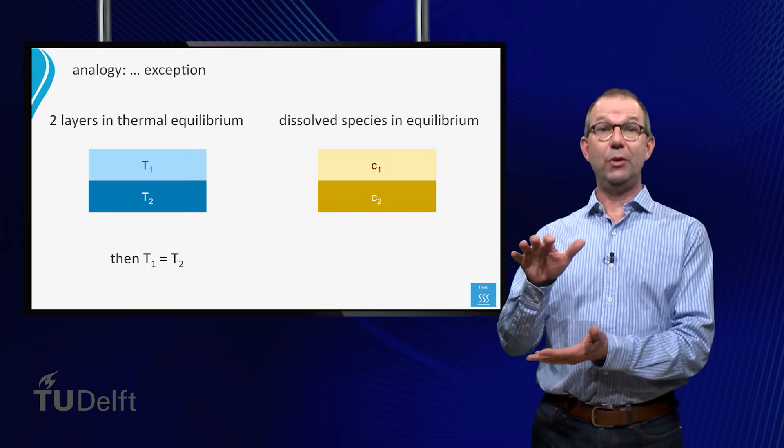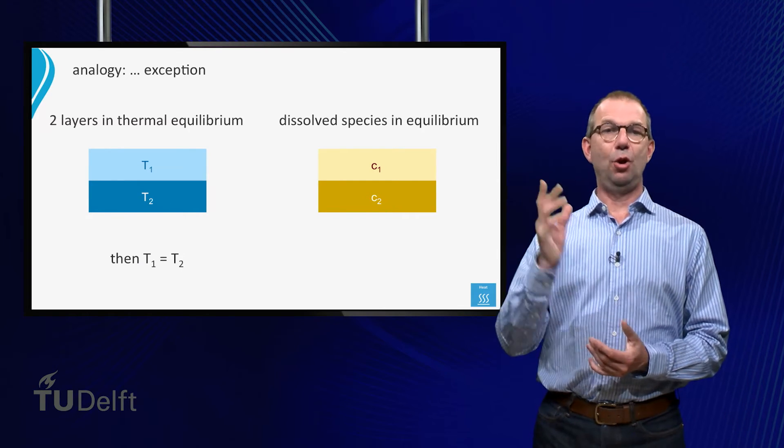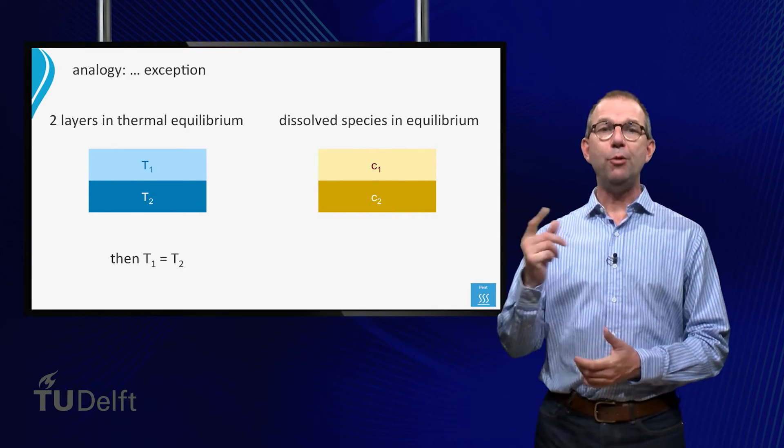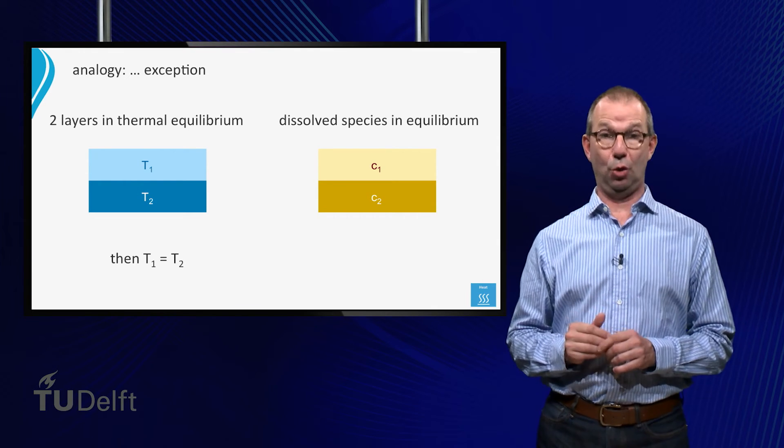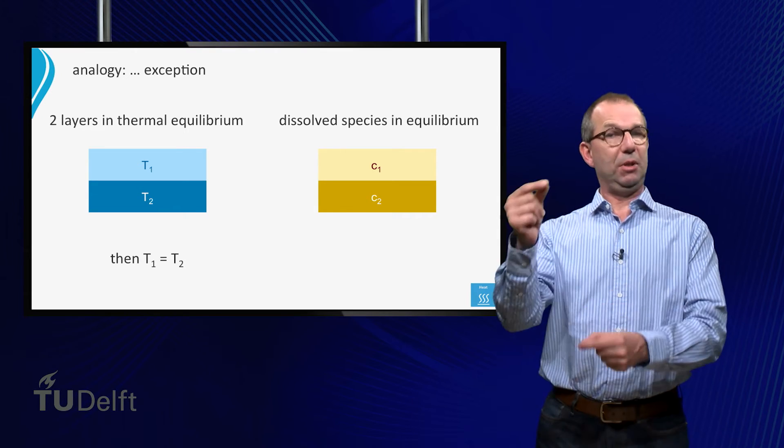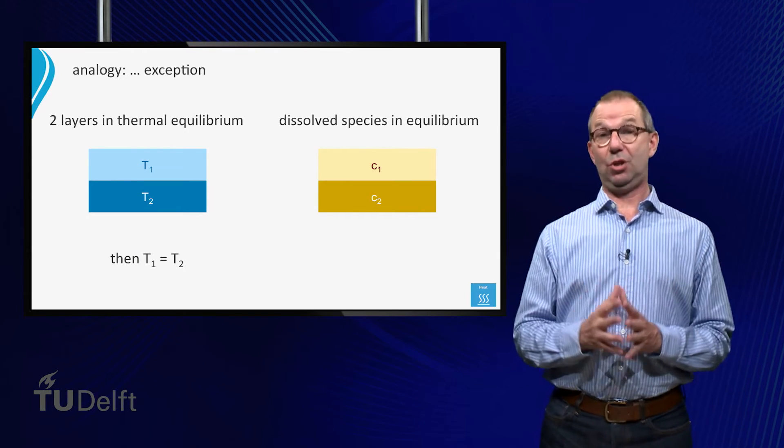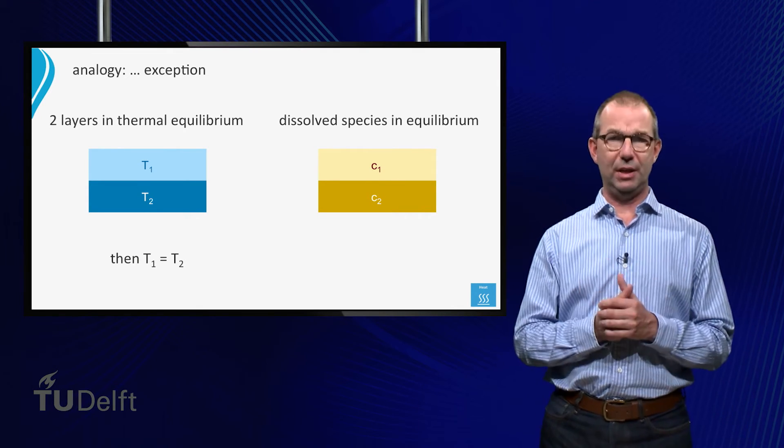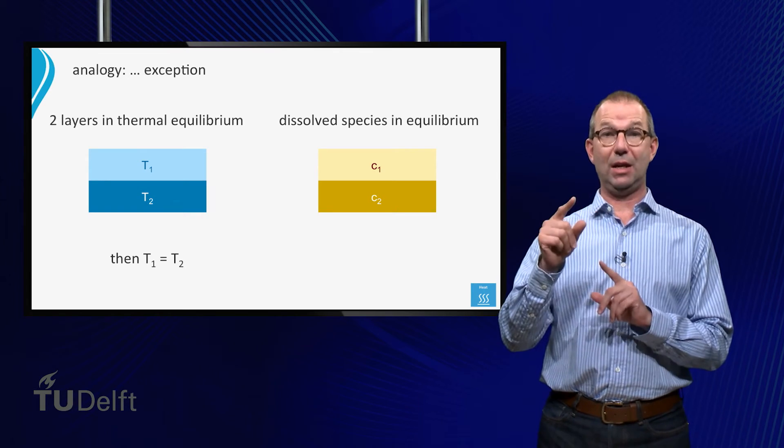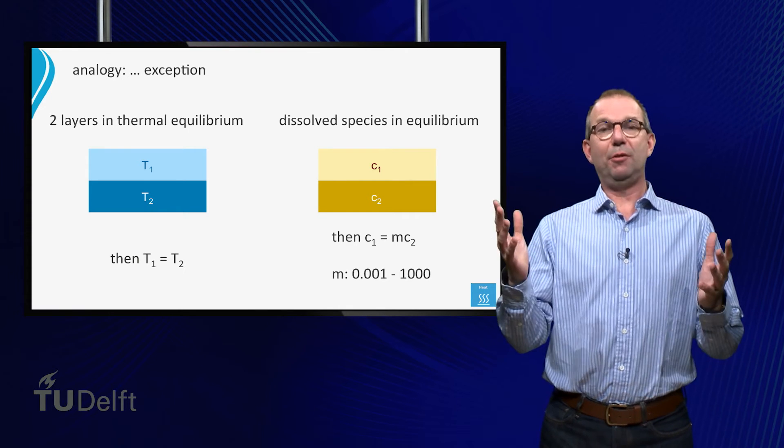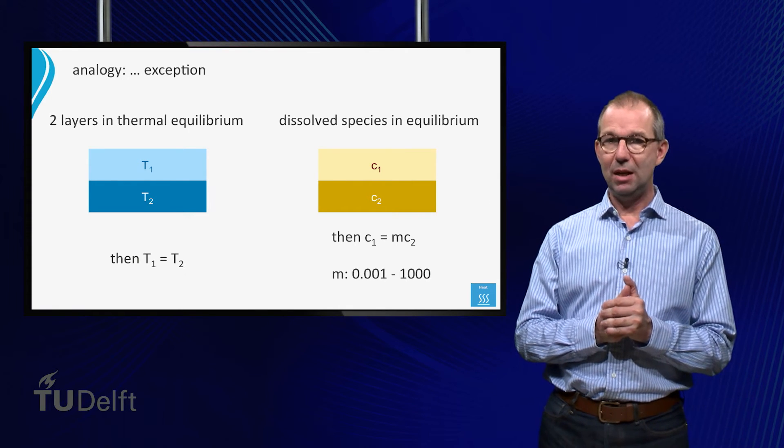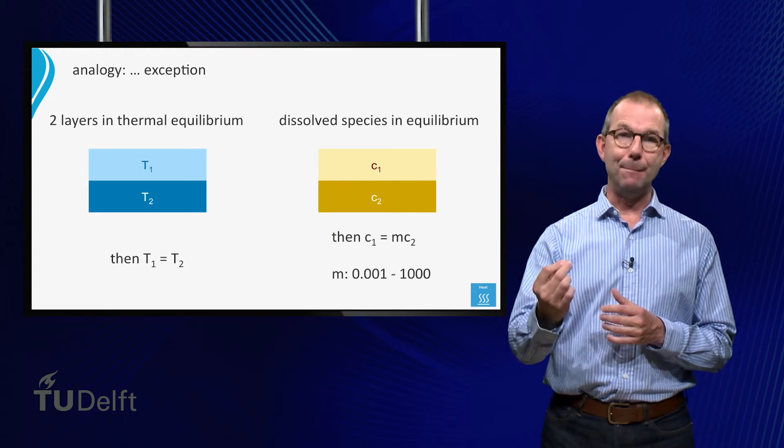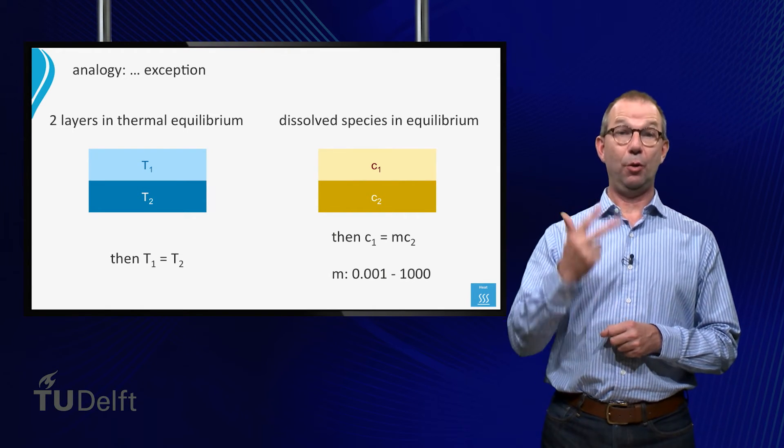Next we consider two layers of liquid on top of each other. These layers don't mix. You can think of an oil layer on top of a water layer. In both of them a third component, X, is dissolved. Initially the concentration of this component will be different in both layers. Now we wait to see what happens. If we would use the analogy with heat transfer, it is tempting to predict that eventually the concentration of X will be the same in both layers. But this is in general not the case. What we will see is that in equilibrium, the concentration in both layers differs by a factor M, and this M is a property of the three species involved.